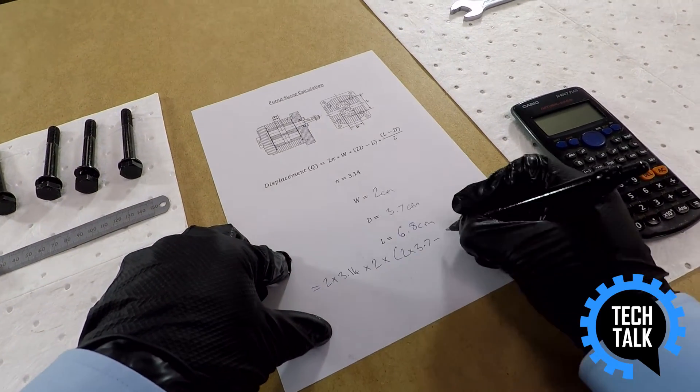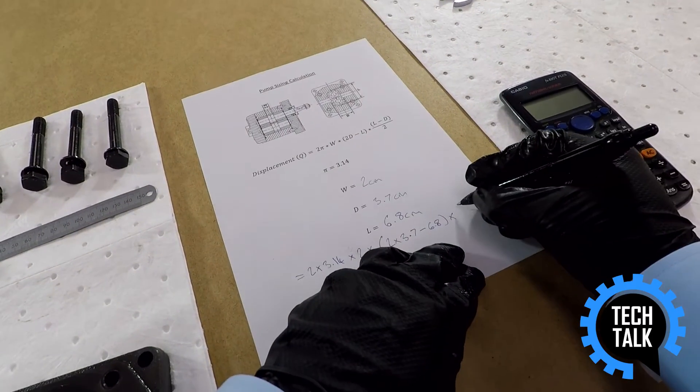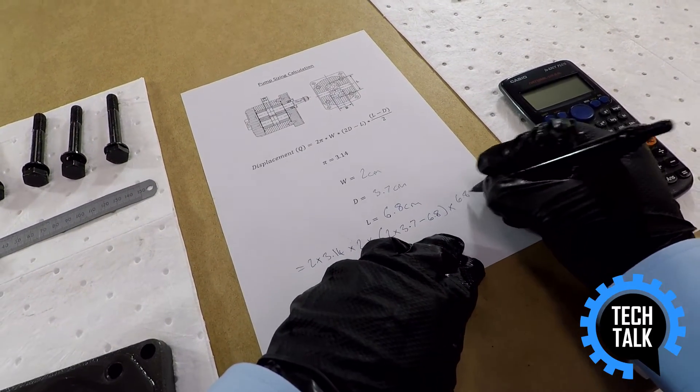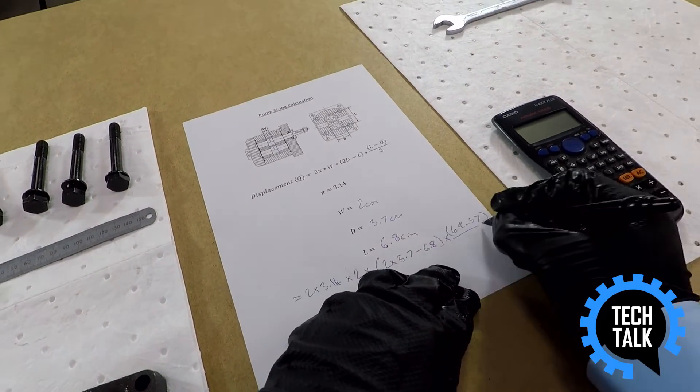Minus L which is 6.8, and finally times that by L which is 6.8 minus D which is 3.7, over 2.